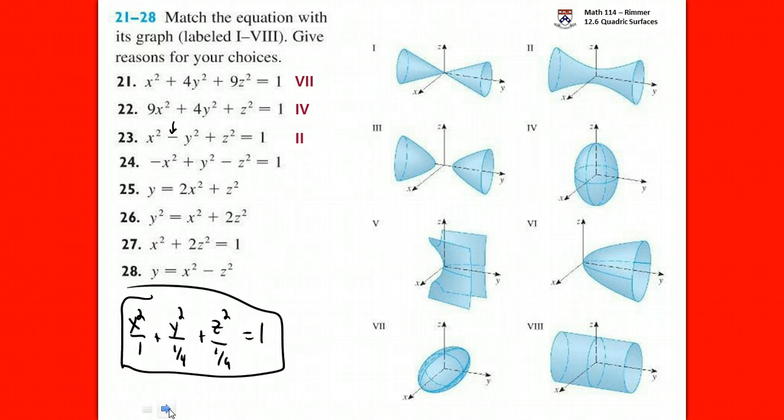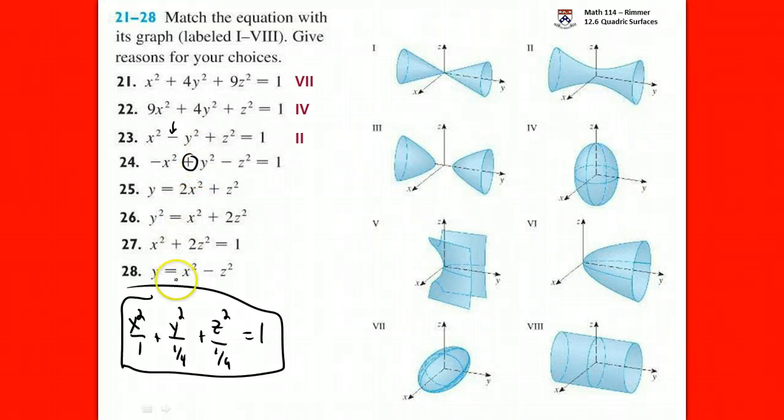Question 24 still has all variables squared and equals 1, but now we have two negative signs, so it's a hyperboloid of two sheets — like a bowl pointing in one direction and another bowl in the other direction. There's only one such shape in our set. The variable without a negative in front is the axis of symmetry and direction in which it opens. So question 24 is Roman numeral III.